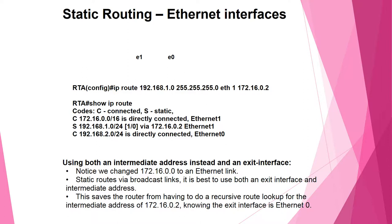For an Ethernet link, using a static route to 192.168.1.0 with exit interface Ethernet 0 and intermediate address 192.168.0.2, then running 'show ip route', demonstrates using both an intermediate address and an exit interface. It is best to use both an exit interface and the intermediate address. This way, the router avoids having to do a recursive route lookup for the intermediate address, knowing that the exit interface is Ethernet 0.